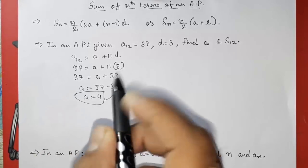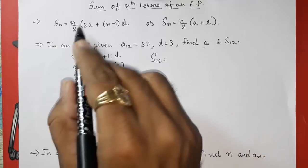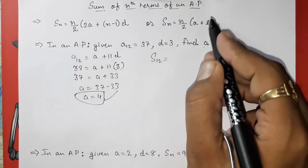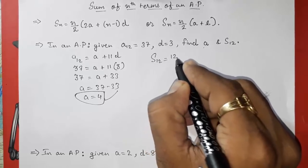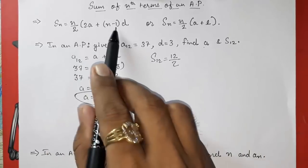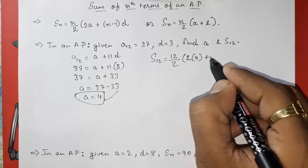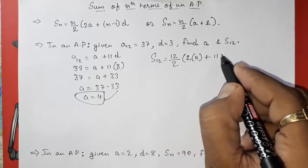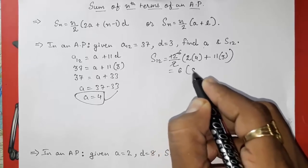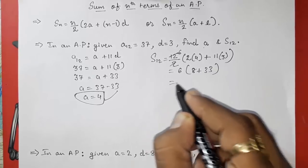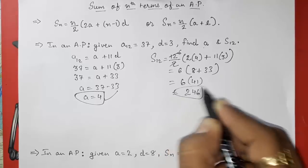So a = 37 - 33, which gives a = 4. This is our first answer. Now we want to find S₁₂. We use the formula S₁₂ = (12/2)[2a + (n-1)d], since we don't have L. Putting in values: 6 × [2×4 + 11×3] = 6 × [8 + 33] = 6 × 41 = 246. So the sum S₁₂ = 246.